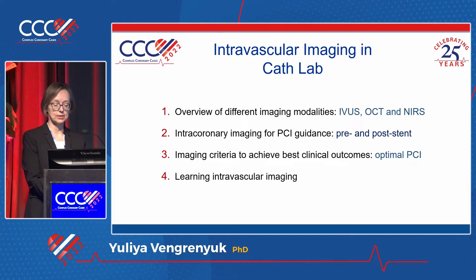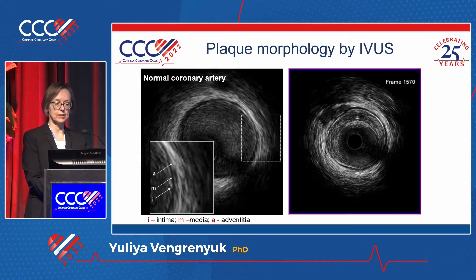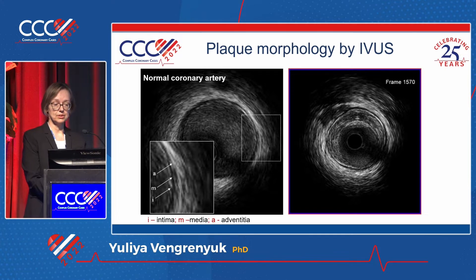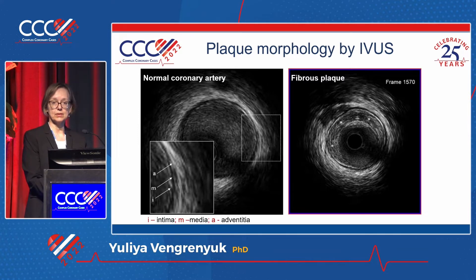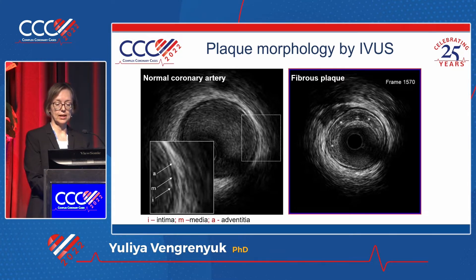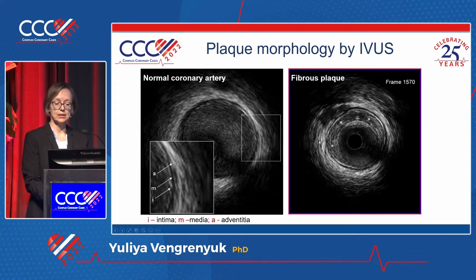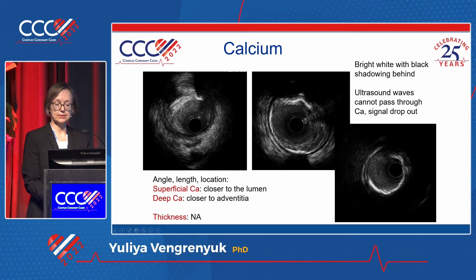More than 40 years ago, IVUS was introduced and we started using it in the cath lab. This is a normal coronary artery and fibrous plaque, which develops in the intima layer. Fibrous plaque has high collagen content, which is why it has a similar appearance to adventitia — a bright, white-red appearance. This is calcification by IVUS.